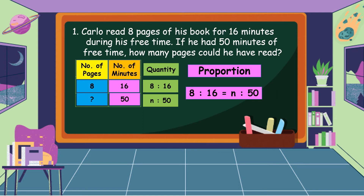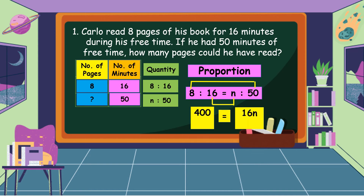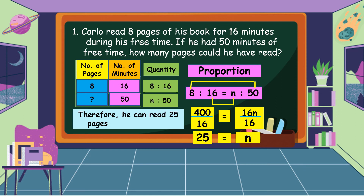As we know, in a proportion the product of the means equals the product of the extremes. In this example, 8 and 50 are the extremes, so we multiply: 8 times 50 is equal to 400. And 16 and n are the means, so their product is 16n. To get the value of n, we divide both sides of the equation by 16: 16n divided by 16 equals n, and 400 divided by 16 equals 25. Therefore, he can read 25 pages in 50 minutes.